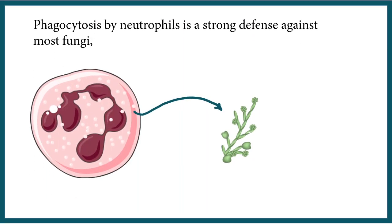Neutrophils are one of the key components of the innate immune system that plays a strong defensive role against most fungi. Neutrophils are highly phagocytotic — they phagocytose the fungus and try to neutralize the threat.